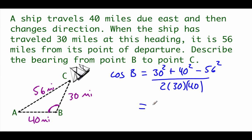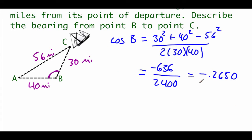On top of our fraction, we've got negative 636, and on bottom, we've got 2,400. If we divide that fraction out, we get negative 0.2650, and then we'll need to do the inverse cosine of that decimal to find angle B, and when we do that, it's about 105.4 degrees.